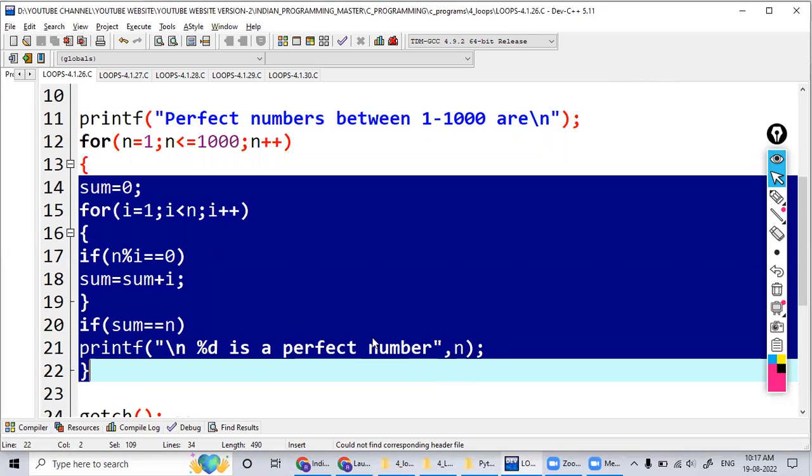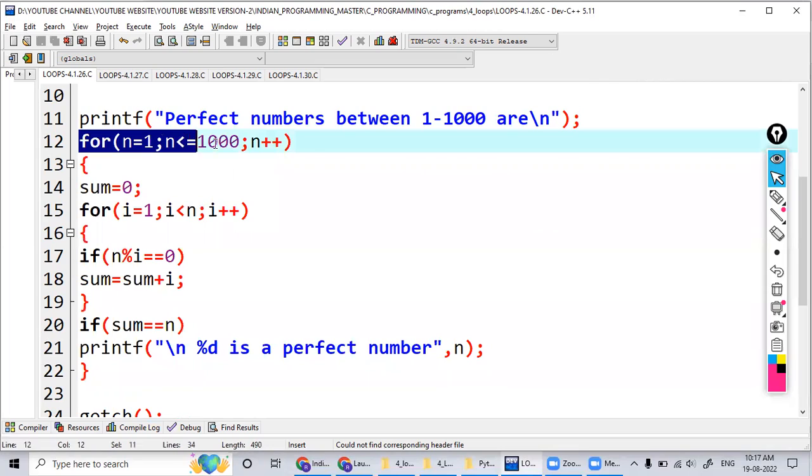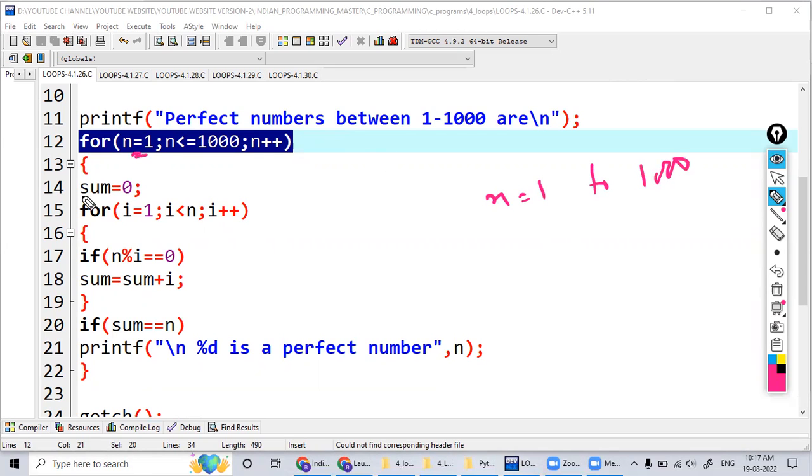I'm using one more for loop to repeat the process for numbers from n equal to 1 to 1000. When n is 1, this logic is executed up to here. After this process, it goes to n plus plus, n value becomes 2. 2 is less than 1000, so again it's a continuation process.